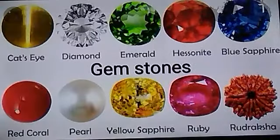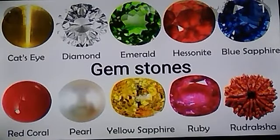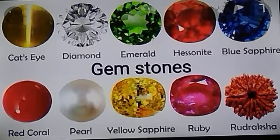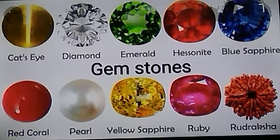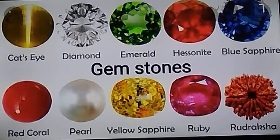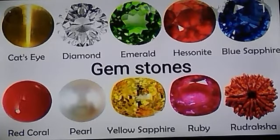There are some other non-metallic minerals called gemstones. Many minerals are found in the form of crystals. They are very hard and can be cut and polished to make gemstones, which are used in jewellery. Examples include diamond, emerald, blue sapphire, red coral, pearl, yellow sapphire, ruby and others. All these are different types of gemstones used for making jewellery.